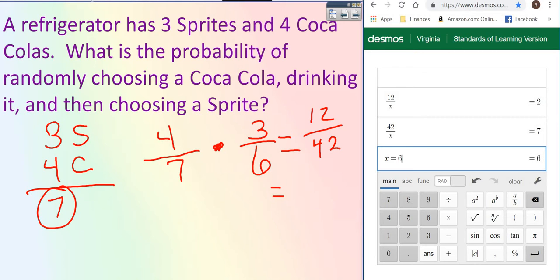Ah, there you go. That worked. It gave you 2 over 7. So that's your simplified fraction.